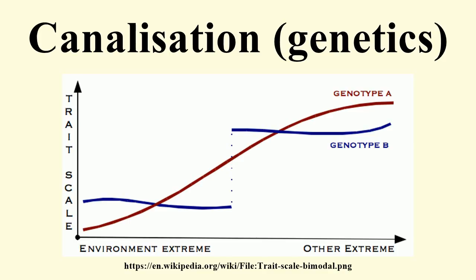Biological robustness or canalization comes about when developmental pathways are shaped by evolution. Waddington introduced the epigenetic landscape, in which the state of an organism rolls downhill during development.